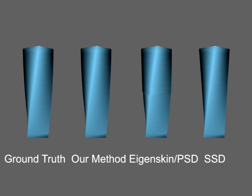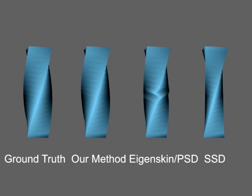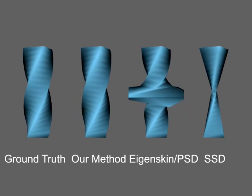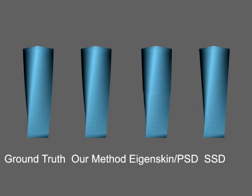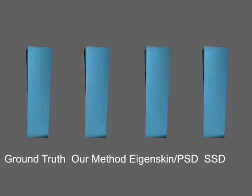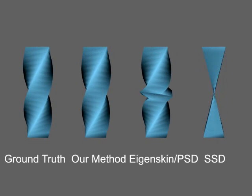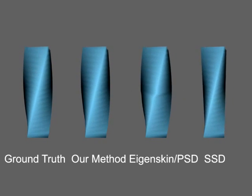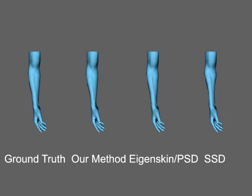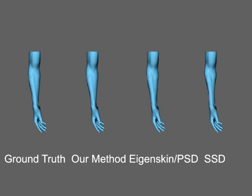There has been a rich body of prior work that has tried to address the deficiencies of SSD. Displacement interpolating techniques, such as pose space deformation, add corrective displacements to an existing SSD model, but generalize poorly for cases in which SSD cannot approximate the rotational deformations. Our model correctly captures the twisting present in both the bar and the elbow.